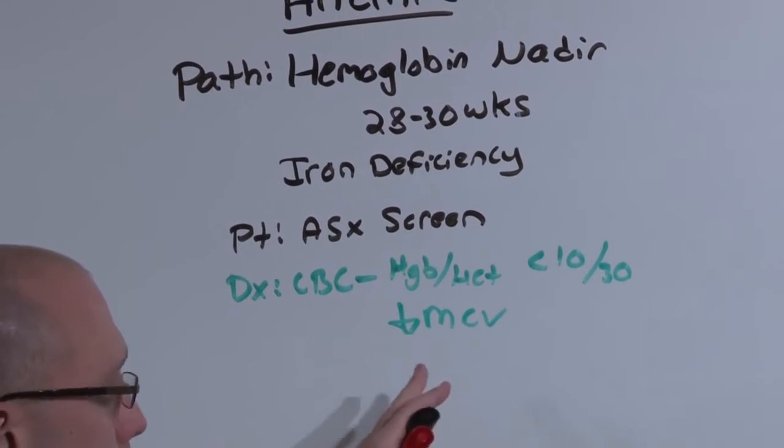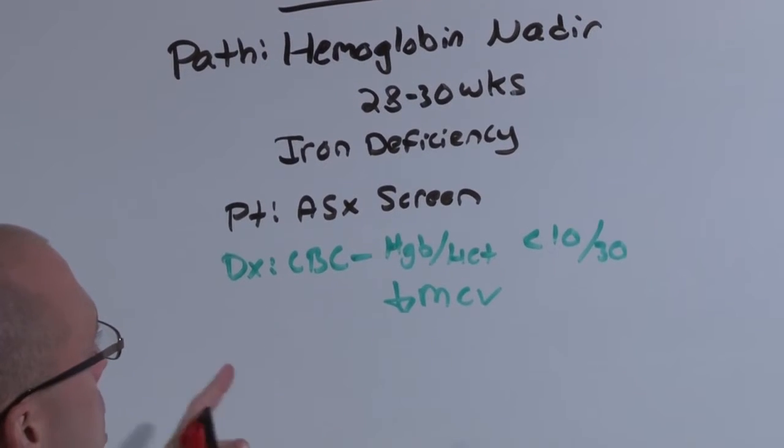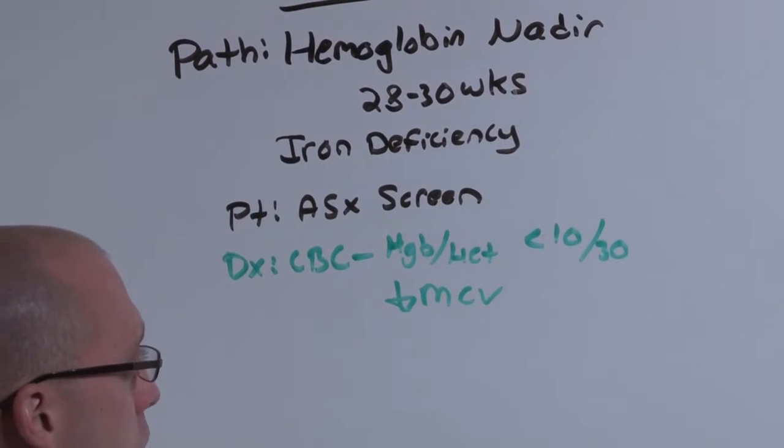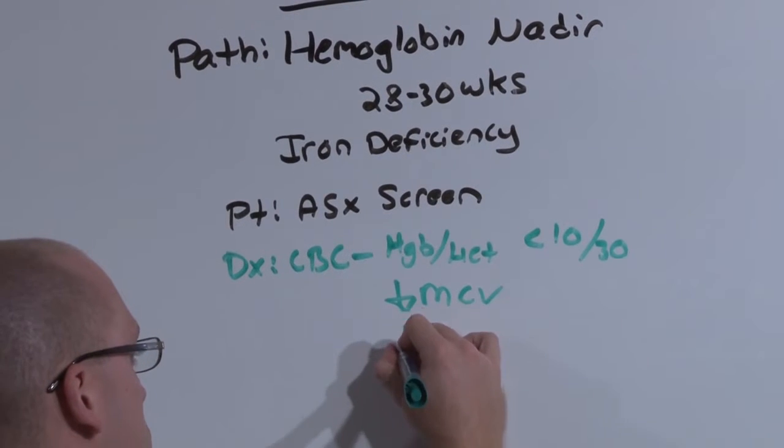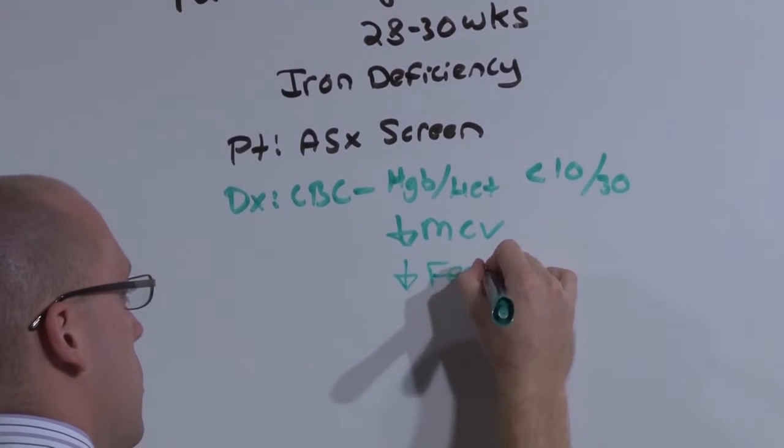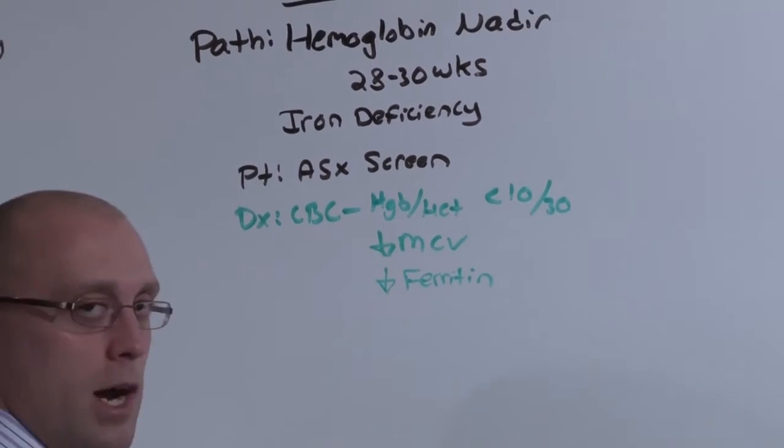Now, there's a lot of details about anemia. That's four lectures worth in the medicine lectures. But because you're anticipating your pregnant female being iron deficient, if you see an anemia and a low MCV, the best test to get is a ferritin. If you see a decreased ferritin, decreased MCV, iron deficiency.